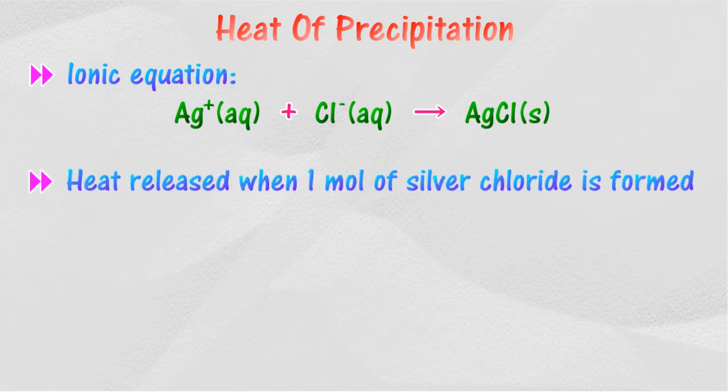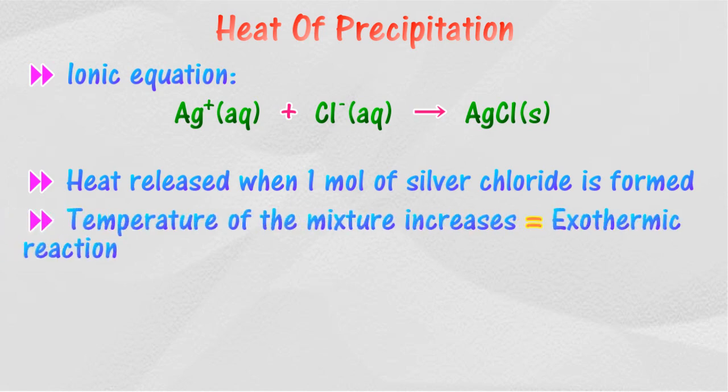The heat of precipitation of silver chloride is the heat that is released when one mole of silver chloride is formed. The precipitation reaction of silver chloride is an exothermic reaction because the temperature of the mixture increases.